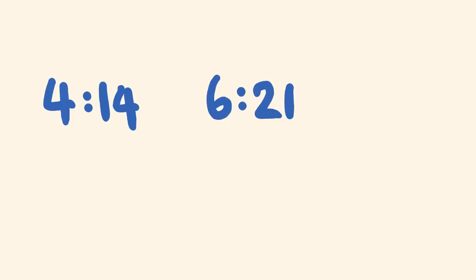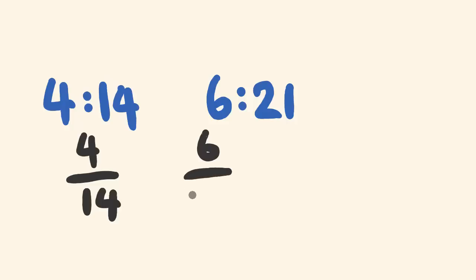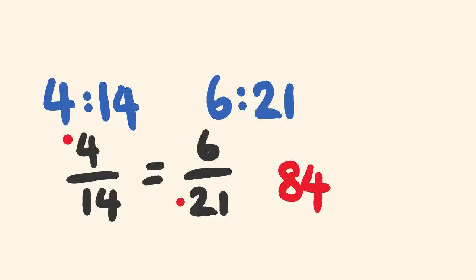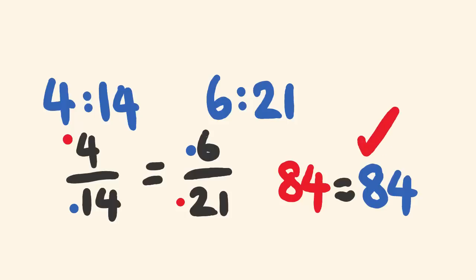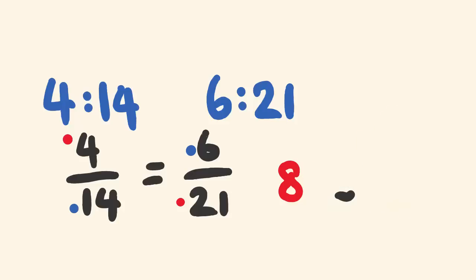Let's look at two ratios: 4 is to 14, and 6 is to 21. We want to see whether these are in proportion. Writing them as fractions: 4/14 and 6/21. Cross multiplying: 4 times 21 is 84, and 6 times 14 is also 84. Because these results are equal, these two ratios are said to be in proportion.